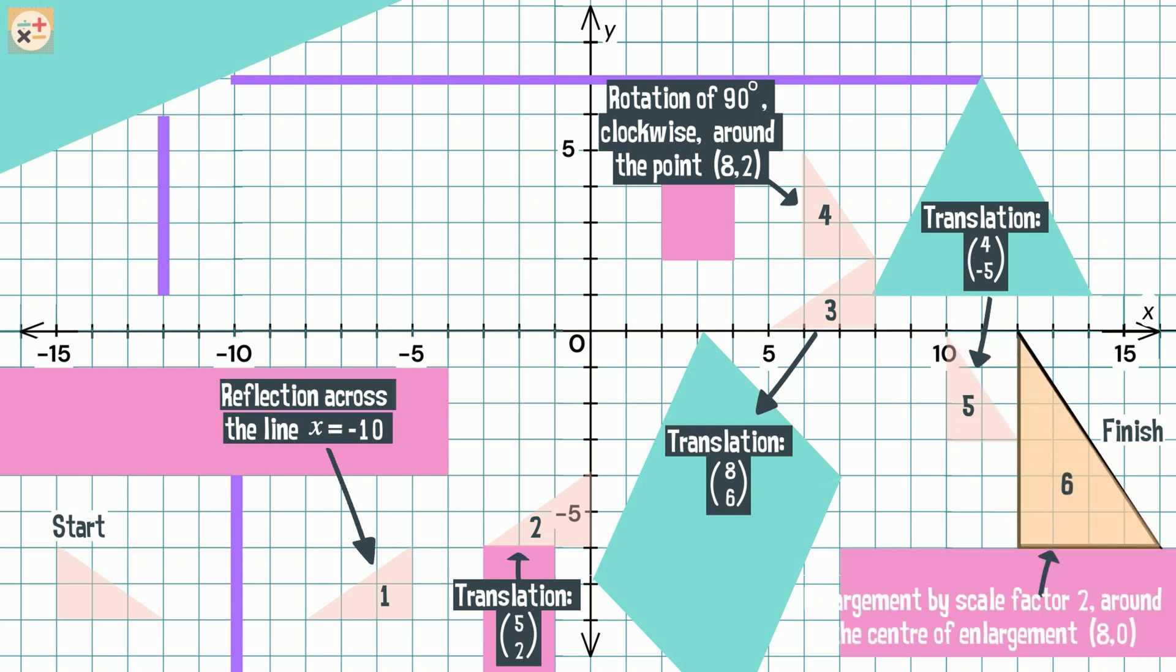Finally, we have enlarged the shape for the sixth move. It has been enlarged by a scale factor of 2, around the center of enlargement 8, 0.